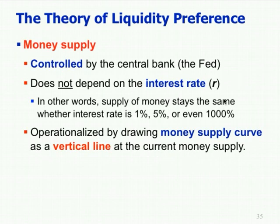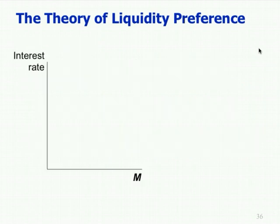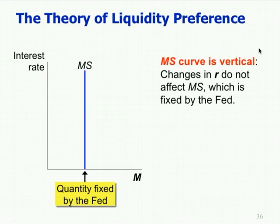To get supply and demand we also need the supply. Money supply is controlled by the central bank — it does not depend on the interest rate. In other words, the supply of money stays the same regardless of whether the interest rate is 1%, 5%, or even a thousand percent; it's dictated by the choices of the Fed. We depict that by drawing the money supply curve as a vertical line at the current money supply.